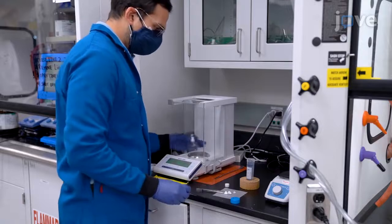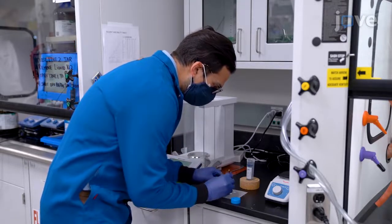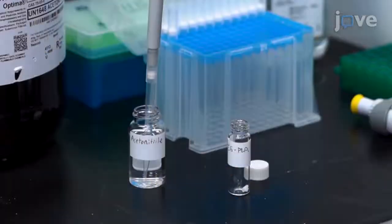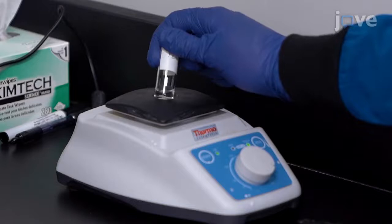To synthesize nanoparticles by nanoprecipitation, add 50 mg of PEG-PLA polymer to an 8 mL glass scintillation vial and add 1 mL of acetonitrile to the vial. Vortex to fully dissolve.